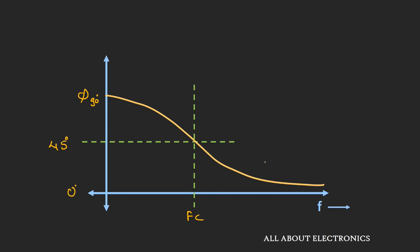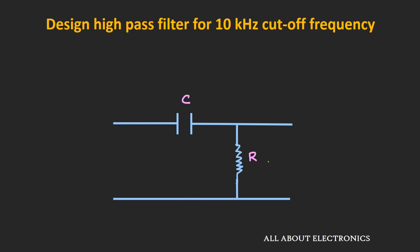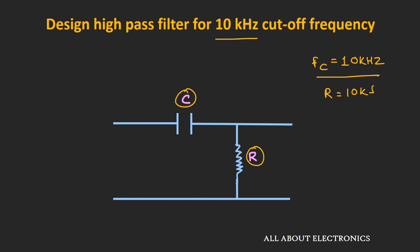Now let's take an example based on this high pass filter. We are asked to design a high pass filter with a cutoff frequency of 10 kHz. We need to select values of capacitor and resistor to achieve this. We will arbitrarily choose the resistance R as 10 kΩ and determine the capacitor value.